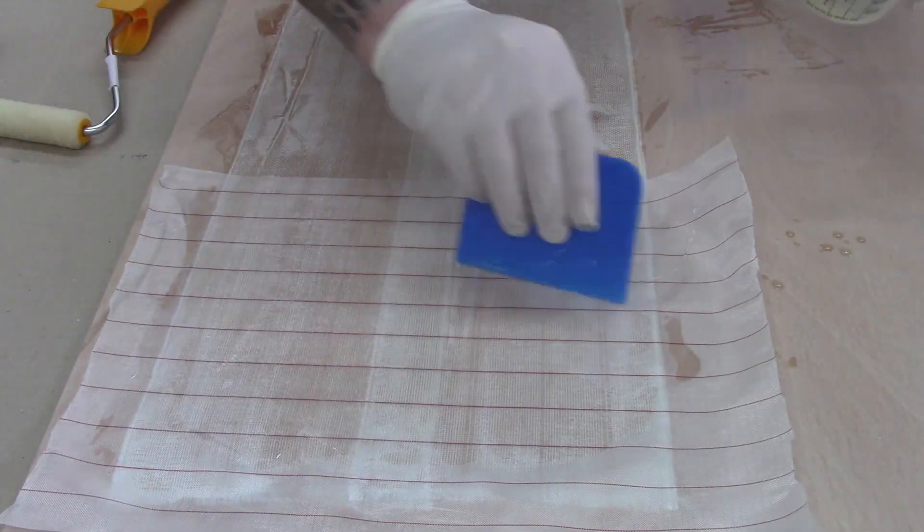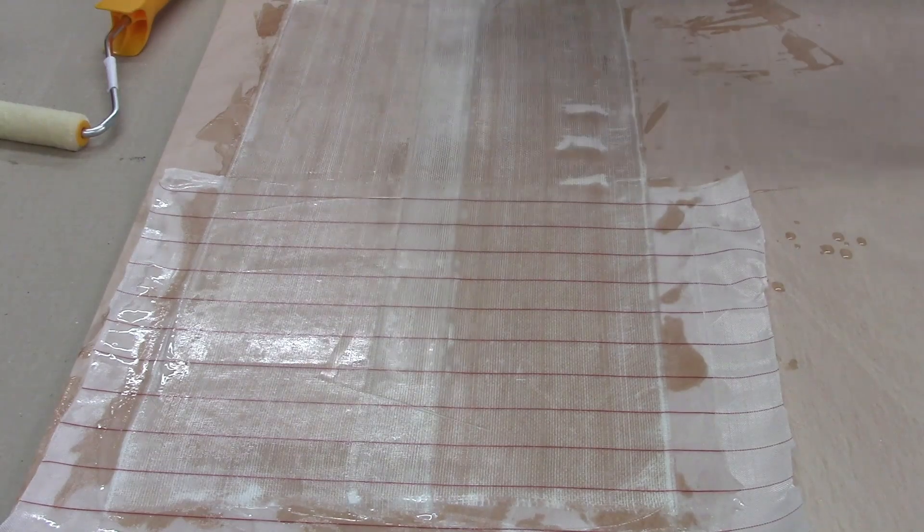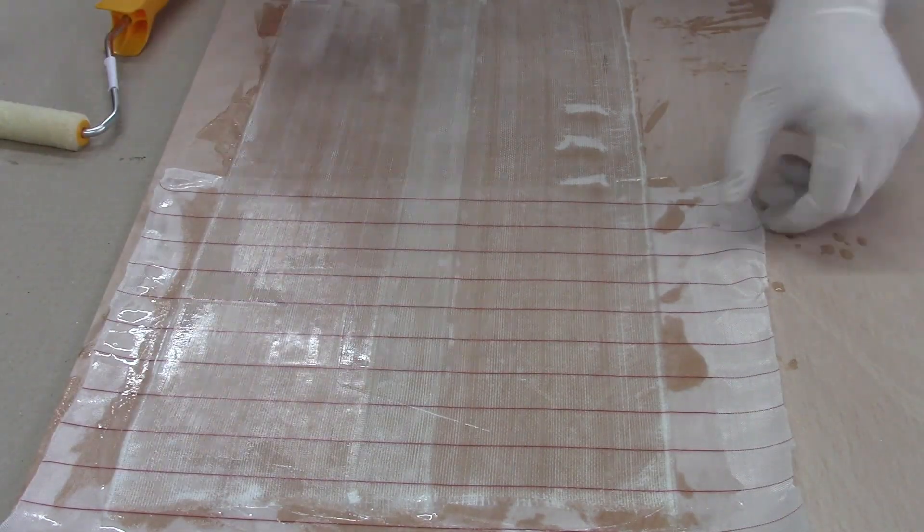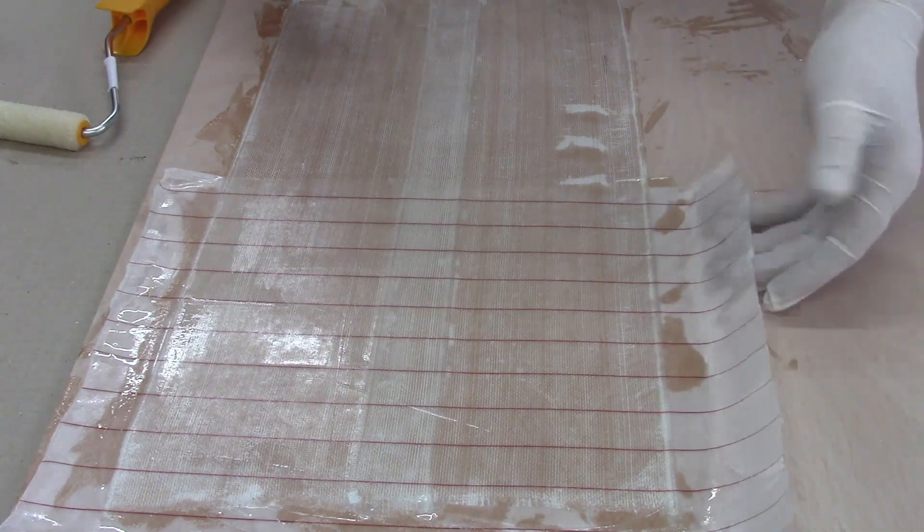Once you've achieved a consistent colored surface with no obvious air bubbles or pockets, leave it to cure. Remember to leave a bit of dry peel ply hanging off the edge, and this will help with peeling off later.